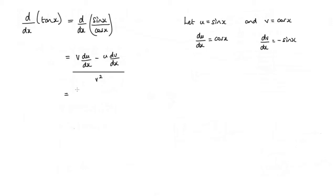So if I substitute these into this expression, what I'll get is v du dx, which is cos squared x. I've got this negative, and then I've got to have u dv dx.